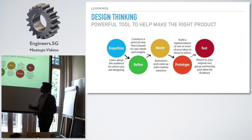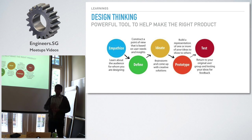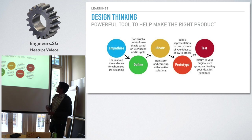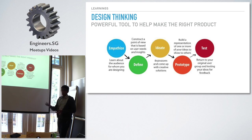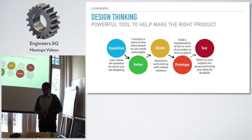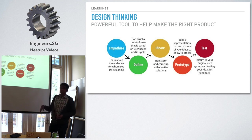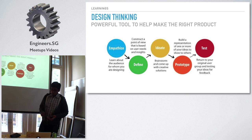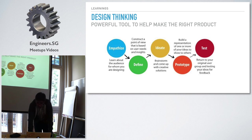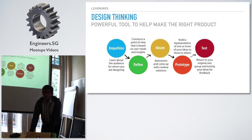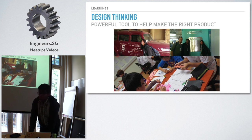One of the tools I used throughout this process was design thinking — a powerful tool to help make the right product, keeping design in mind throughout the whole development cycle. It comprises five steps: empathize — learn more about your audience; define the problem; ideate about how to solve it; prototype your solution; and test it with users. It's iterative — after testing you go back to prototyping or ideation. This was created at Stanford D School and is popular in product development.